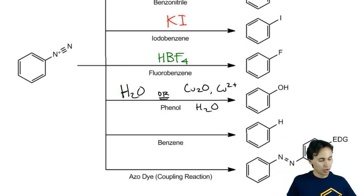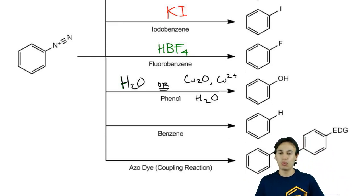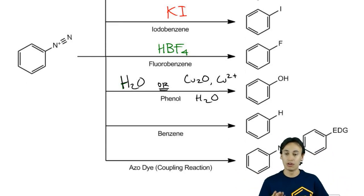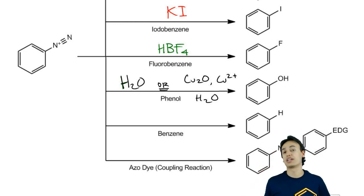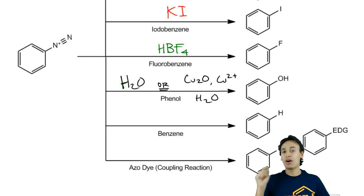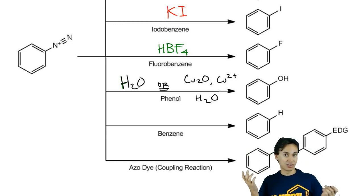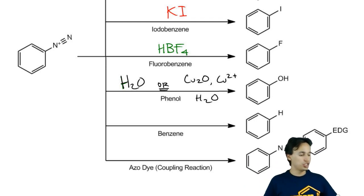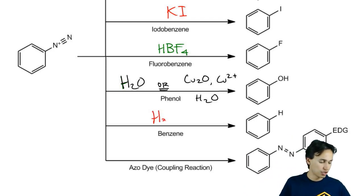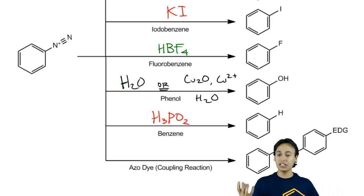What about just getting back to benzene? Why would you want that? It could be useful as a blocking group strategy — put the diazo group in place, block a position, then remove it. Using H3PO2 will completely remove the diazo group and replace it with a hydrogen, giving you back a plain benzene.